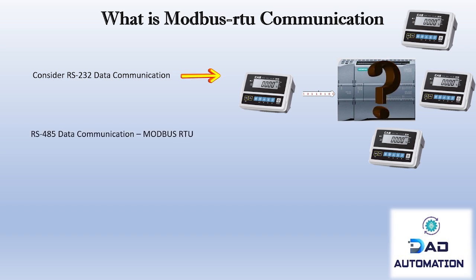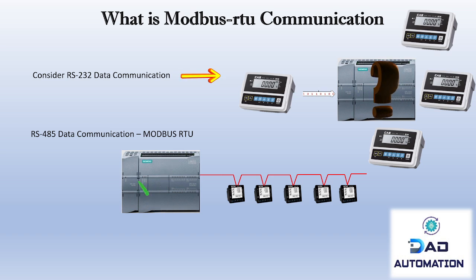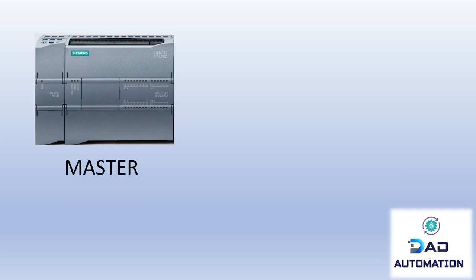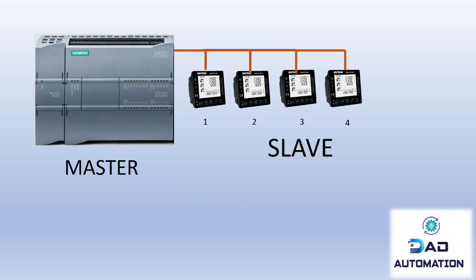RS485 data communication is extensively used in industrial environments to communicate with many devices. Modbus RTU is one protocol used in this communication system. In a Modbus network, the PLC is called the master — it is the leader of the communication system to read data from other connected devices, which are known as slave devices. The beauty of this Modbus RTU network is that it can connect up to 247 slave devices on one pair of cables, so the PLC needs only one port to communicate with all 247 devices.